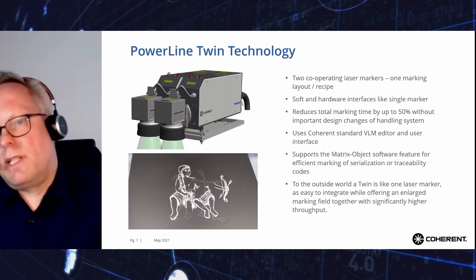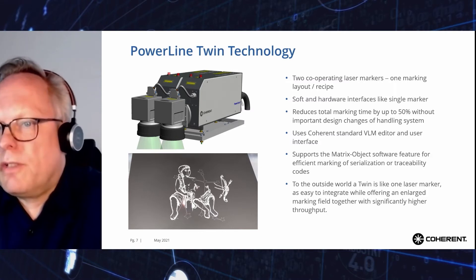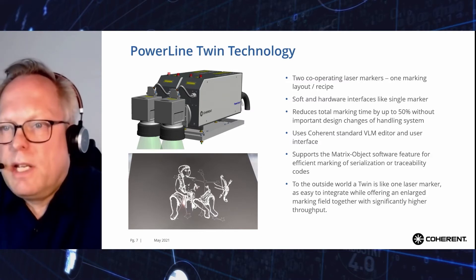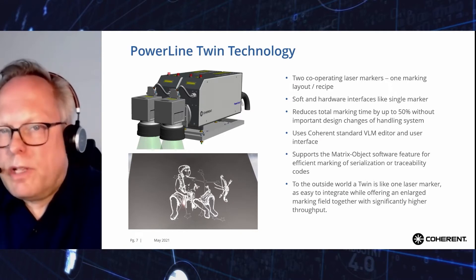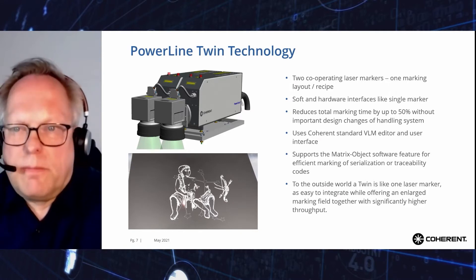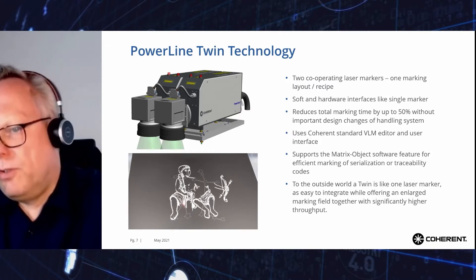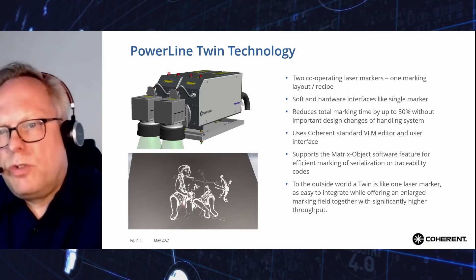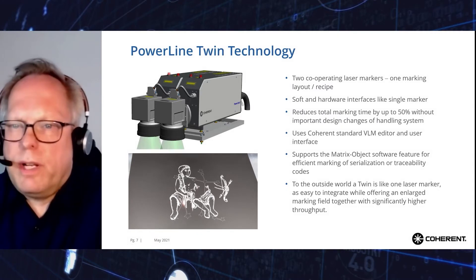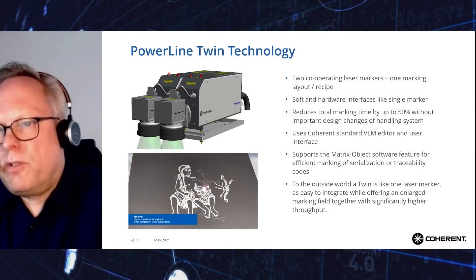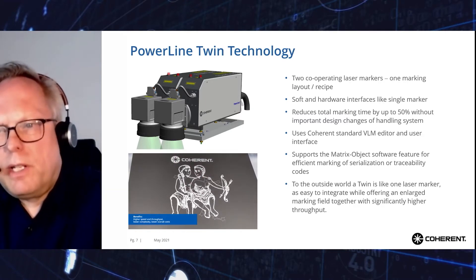The second example is TWIN technology. TWIN configurations are a unique new technology, primarily designed for serialization marking of semiconductor devices, but offering interesting features for other industries too. Instead of two-step marking, the two laser markers of a TWIN cooperate and simultaneously mark the left and right sides of the full marking layout, doubling marking speed.